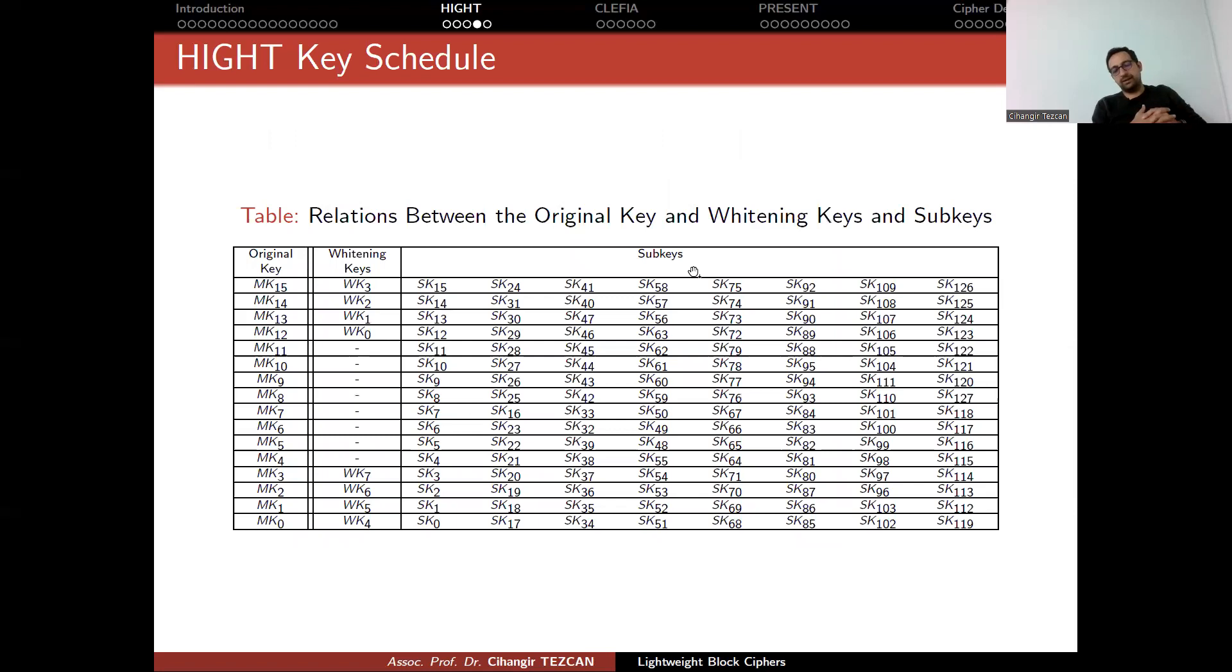We actually looked at the key schedule algorithm. Key schedule just changes the position of bytes and maybe XORs and so on. But what we observe is that this is the original key, 16 bytes. So if you know the 0 byte of the master key, this means that you also know the whitening key of 4 and the subkeys bytes 0, 17, 34 and so on.